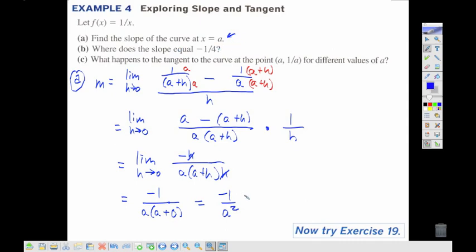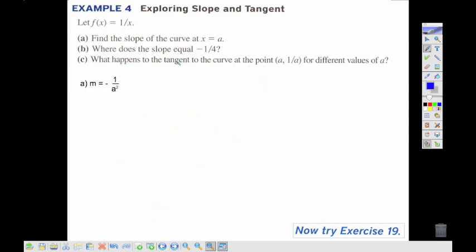So my slope of my curve is just, in general, negative 1 over a squared for our slope. Now to answer part B, I want to know where the slope is equal to negative 1 fourth. So I just take my slope with keeping that a in there, but I set it equal to negative 1 fourth, which means a squared is equal to 4, or we're looking at a at positive or negative 2.